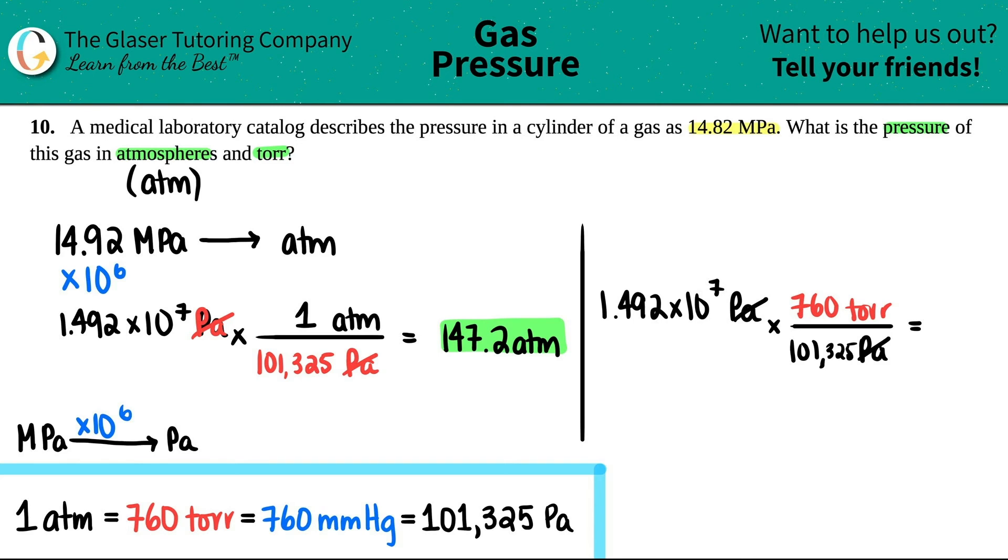So 1.482 times 10 to the 7 times 760 and then just divide that number by 101,325. Three sig figs so I'm going to round it out, I'm going to say 1.12 times 10 to the 5. There you go and now we're not in pascals we're in torr.